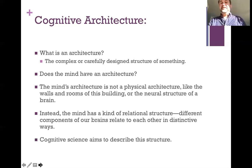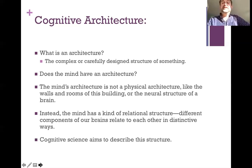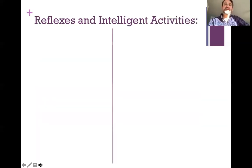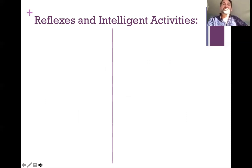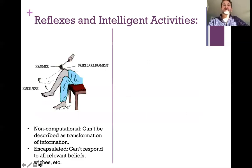What we mean when we talk about the mind having an architecture is that the mind has a kind of relational structure. There are different components of our brains that relate to each other in distinctive ways. And that is what cognitive science is attempting to describe for the human mind. The article you read draws a distinction between brute reflexes and intelligent activities, so let's think of two examples.